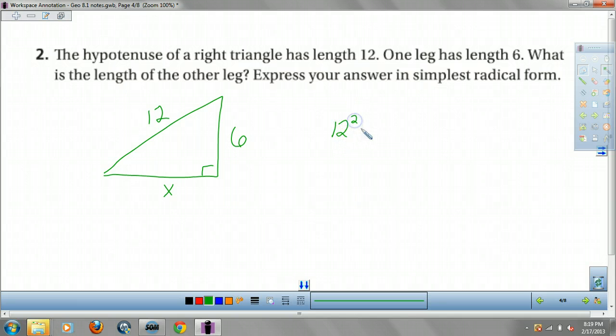My hypotenuse squared equals leg squared plus leg squared. I get 144 equals 36 plus X squared. Subtract my 36. And I get, what do I get, boom, boom, boom, I'm going to carry the 1,